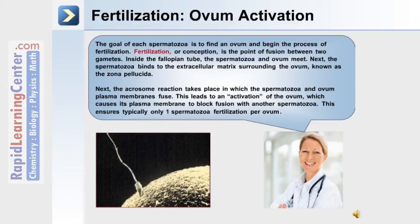Next, the acrosome reaction takes place, in which the spermatozoa and ovum plasma membranes fuse together. This leads to an activation of the ovum, which causes its plasma membrane to block fusion with another spermatozoa. This ensures typically that one spermatozoa fertilization per ovum takes place.